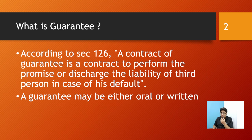It is something where I will do something or I will make the other person discharged from his liability. When one person makes a default in payment, I will pay on his behalf — that is the guarantee I'm giving. A contract of guarantee is a contract to perform the promise or discharge the liability of a third person in case of his default.